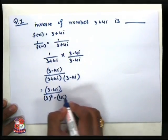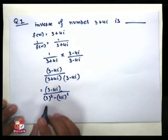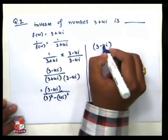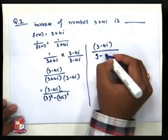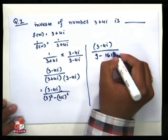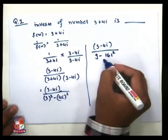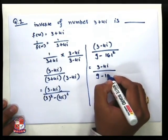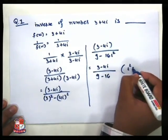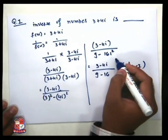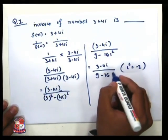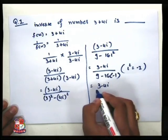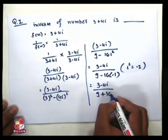We simplify again: 3 minus 4i divided by 9 minus 16i squared. Again simplify — since i squared equals minus 1, we replace the i squared value by minus 1. So 3 minus 4i divided by 9 minus 16 times minus 1 is equal to 3 minus 4i divided by 9 plus 16.